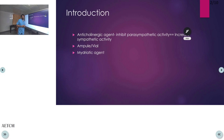Atropine is available in ampule form as well as vial form. In ampule form, 1 ml can contain 0.6 mg, and there is also a variant where 1 ml contains 1 mg.